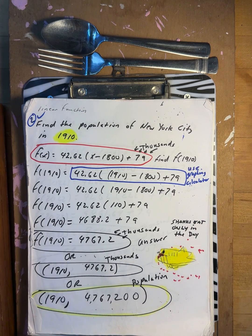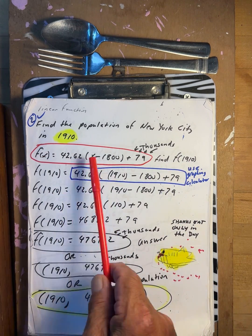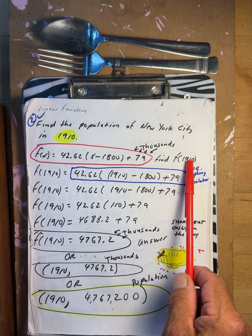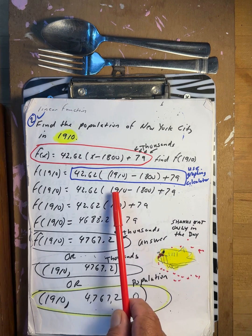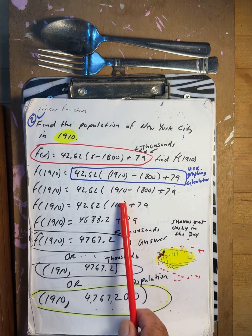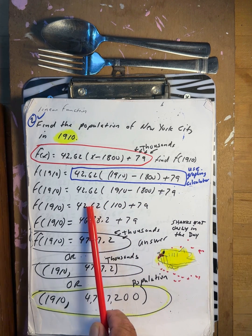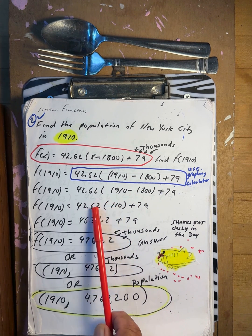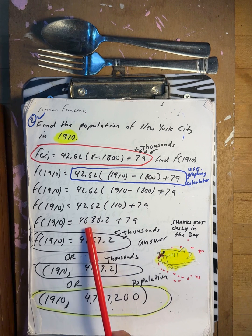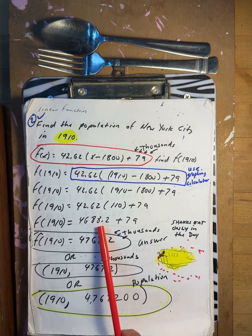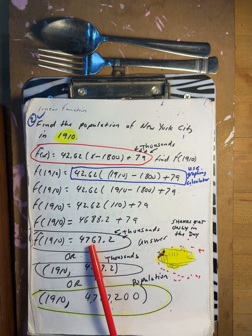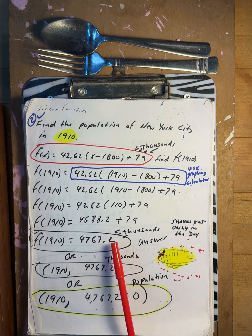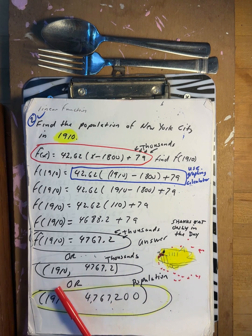Next, find the population in New York City in 1910. Put it in the function: f of 1910. 1910 minus 1800 gives you 110. 110 times the coefficient gives you 4688.2, plus 79 gives you 4767.2 thousands.